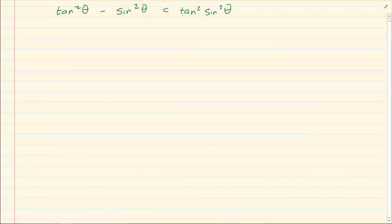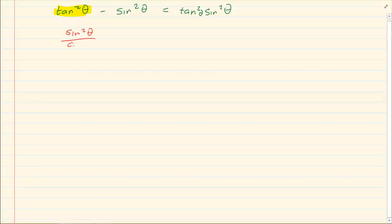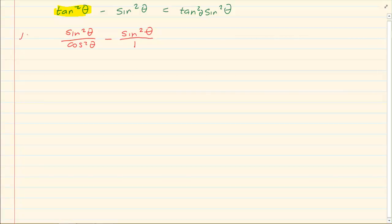One more example: tan squared theta minus sin squared theta is equal to tan squared theta times sin squared theta. The first rule says change everything to sin and cos, so tan squared becomes sin squared theta over cos squared theta, minus sin squared theta. I am leaving the sin squared theta on top and not placing it in the middle, because it is easier to do the algebra when everything is on one level with the denominator at the bottom.